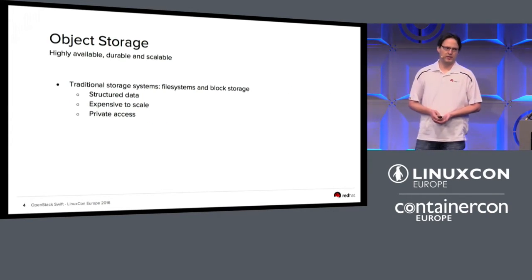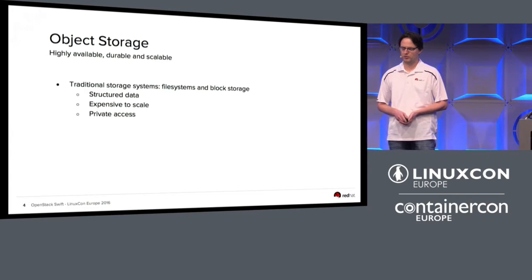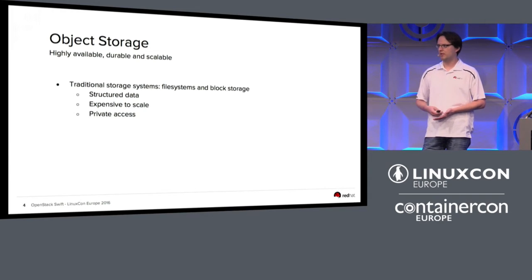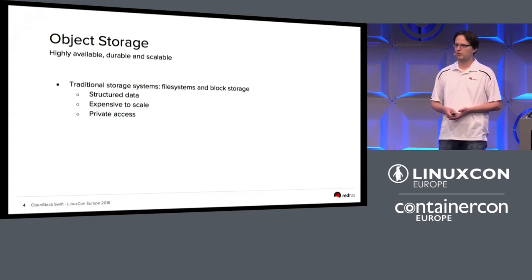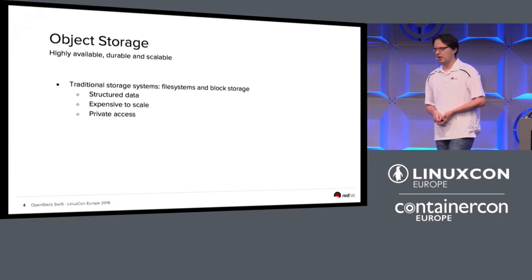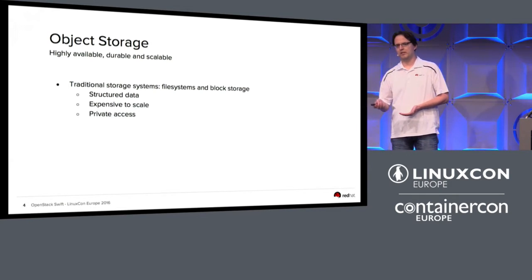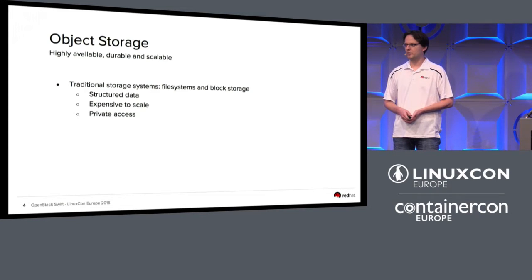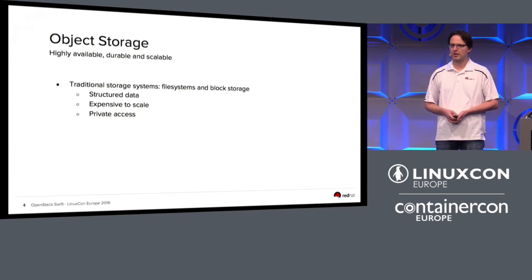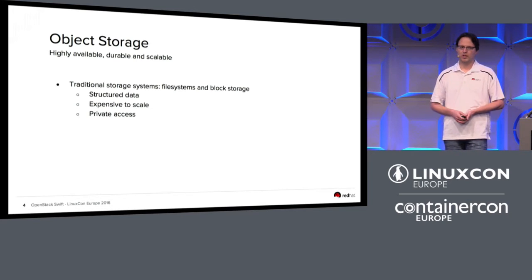Before going into detail with Swift itself, let's have a short look at object storage. A traditional storage system, for example file systems or block storage, is basically built to store structured data. Think of a database server — it needs files in a nested directory structure, a POSIX file system, and locking mechanisms to operate well. This makes it difficult to scale. If you have a very large application, it's probably not a good choice to store large binary blob data within your database. It's especially hard to scale to the petabyte scale. If you've worked in the HPC space with Lustre or GPFS, you know it requires quite expensive hardware to scale to petabytes.